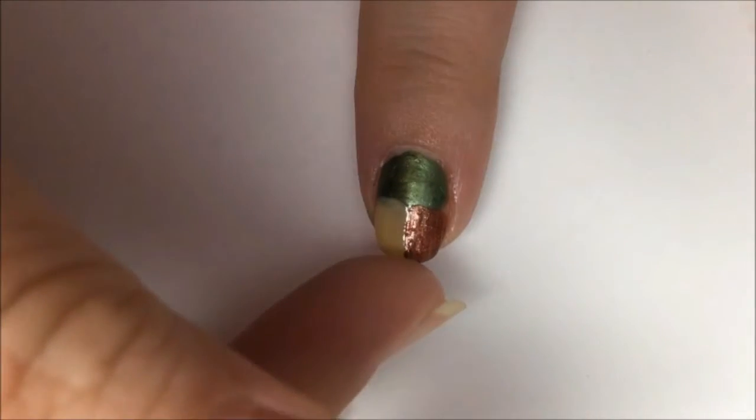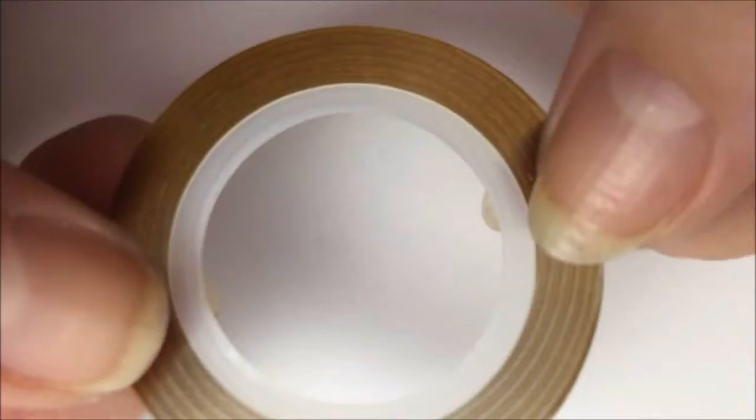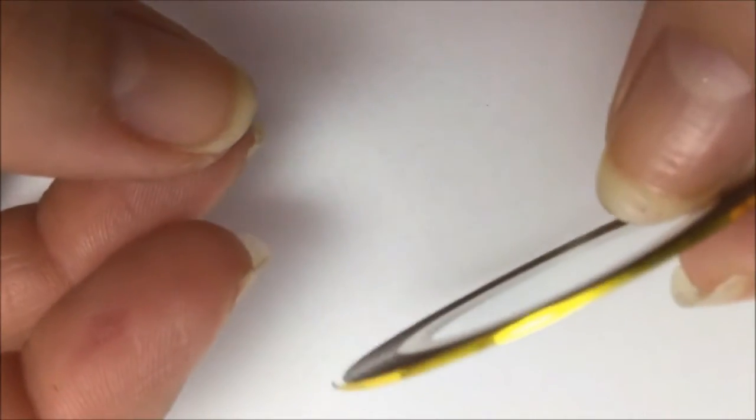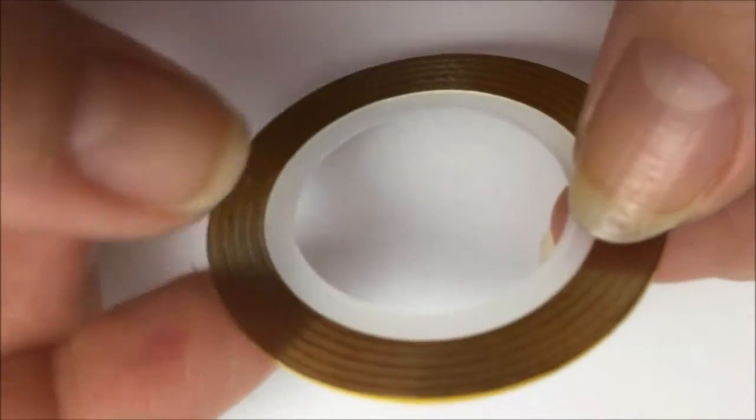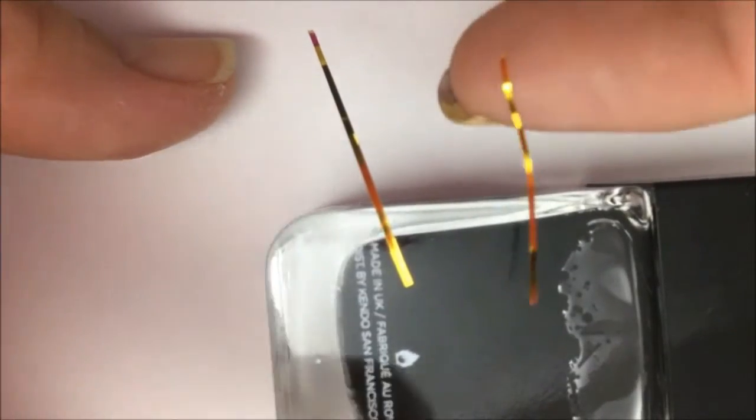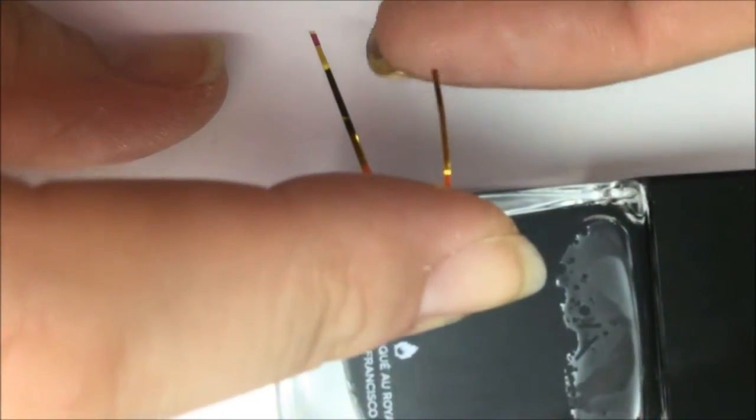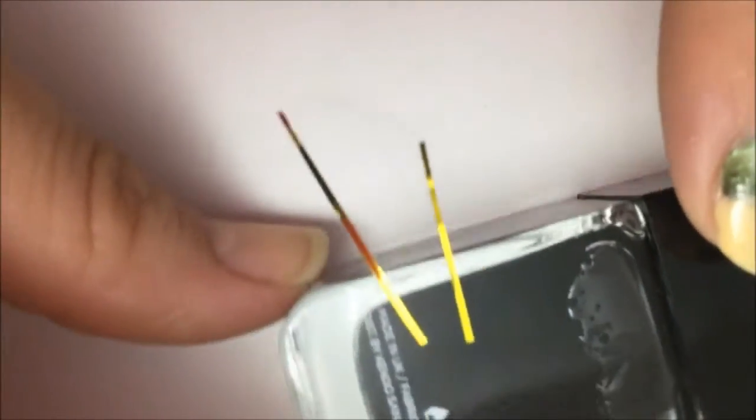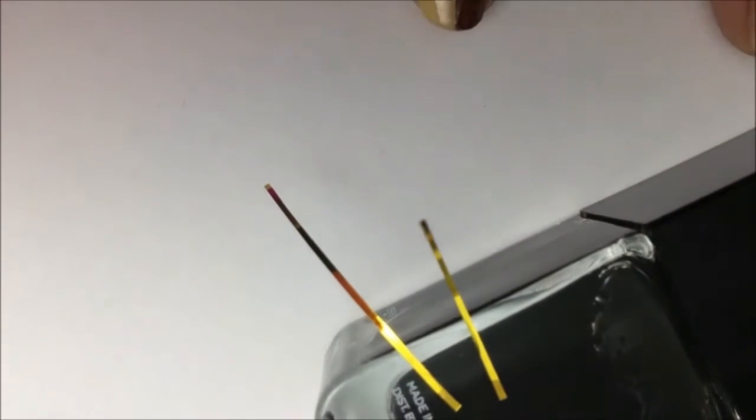Again don't worry about the lines because we're going to cover those up. Take your striping tape and I like to measure my tape out ahead of time and cut it and then just sort of stick them to the edge of a cornered object so they're ready to go when I need to use them. Here I'm just using the edge of a flat nail polish bottle.